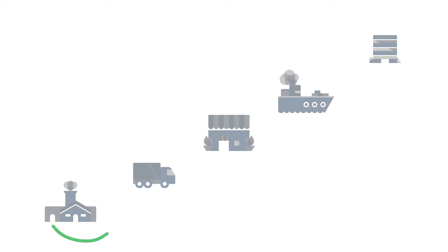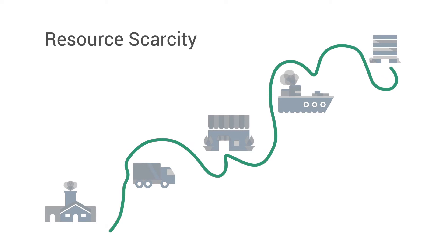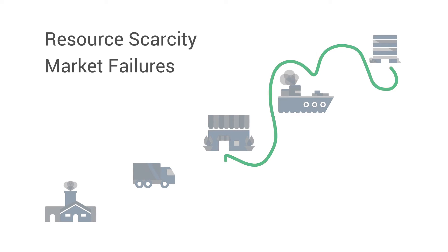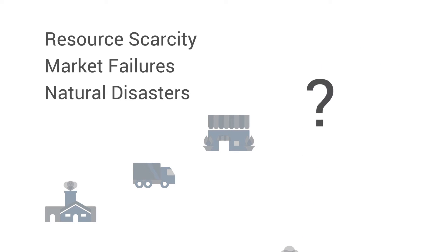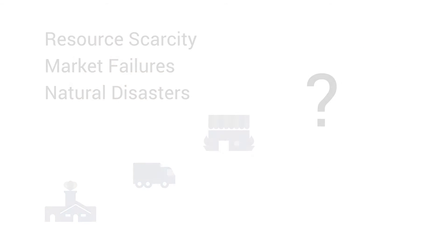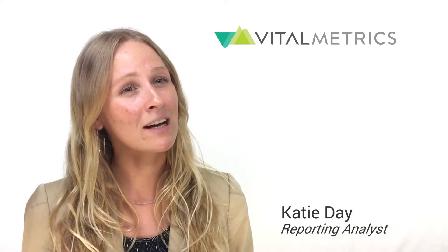By including supply chain emissions, the company can better identify and prepare for risk from supply chain disruptions and price volatility, such as resource scarcity, market failures, or natural disasters. Understanding the supply chain also prepares the company for any potential liabilities with respect to indirect emissions that could result in scrutiny by the public or shareholders.